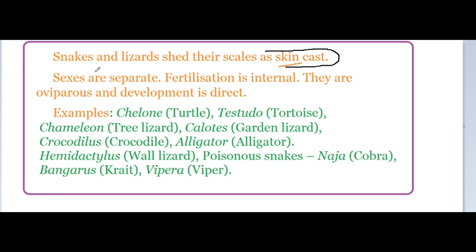Sexes are separate. Fertilization is internal. They are oviparous, meaning egg-laying organisms. Development is direct, which means the young one resembles the adult.